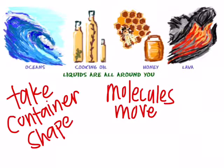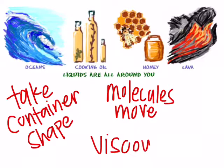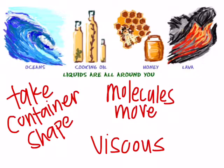Another word that's related to liquids is viscous. Liquids that are very thick are considered to be viscous. So honey would be very viscous while water would not be viscous. Other examples are blood and syrup. Liquids are less dense than solids but more dense than gases.